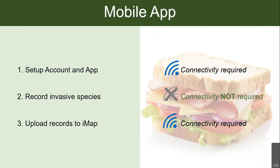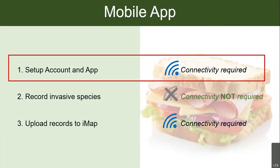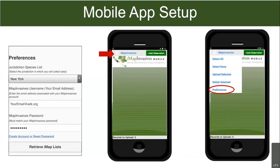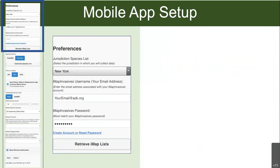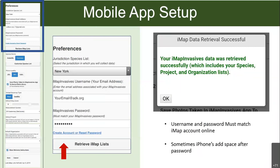When you open the app it'll either bring you to a green screen or straight to Preferences. If it shows the green screen, click the menu on the top left and go to Preferences. Enter the email and password from the account you just made, then hit 'Retrieve List' — you should get a success message. If you don't, try retyping your username and password. One tip: sometimes phones add a space after the password because they think you're writing a sentence, so make sure that doesn't happen.